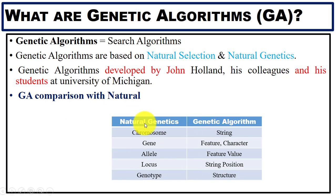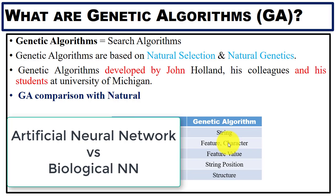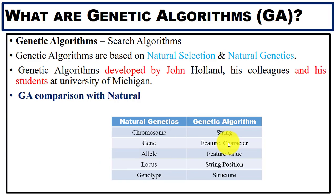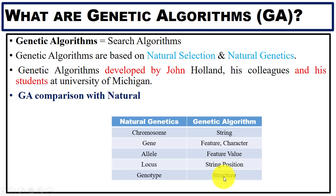We will understand genetic algorithms by comparison with natural genetics. In natural genetics we have chromosomes; in genetic algorithms we use strings. We replace genes with features and characters. Just as you can see the comparison between artificial neural networks and biological networks, here we replace chromosome with strings, genes with features, and biological terms with string features, feature values, string position, and structure.